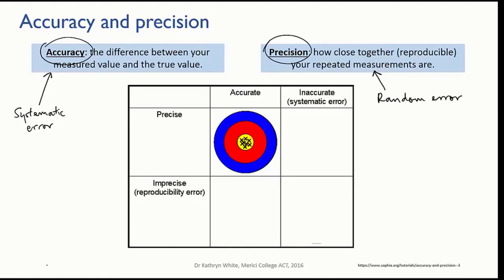The classic analogy here is of arrows in a target. The first target here shows an archer with high accuracy and high precision.